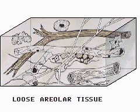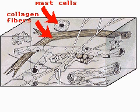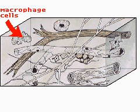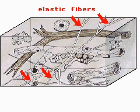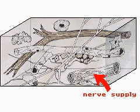Most common is loose areolar tissue, which contains most of the basic connective tissue components: mast cells, collagen fibers, macrophage cells, fibroblasts, blood supply, fat cells, elastic fibers, reticulin, nerve supply, and plasma cells.